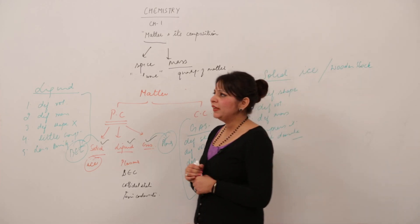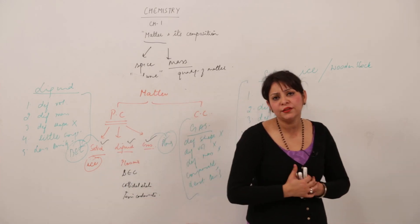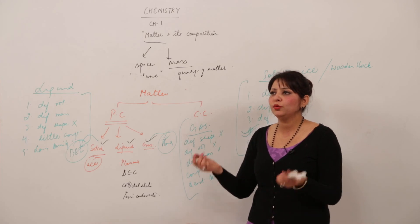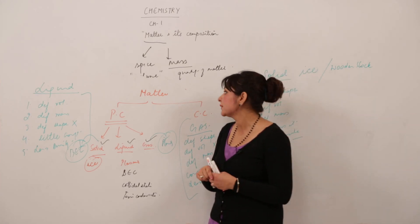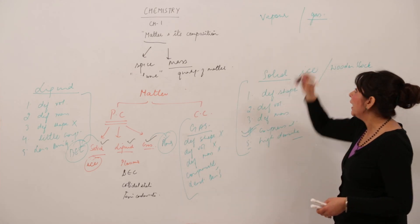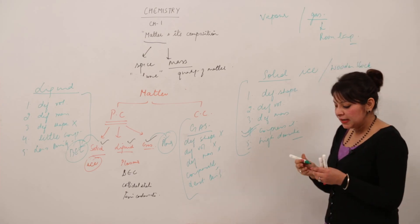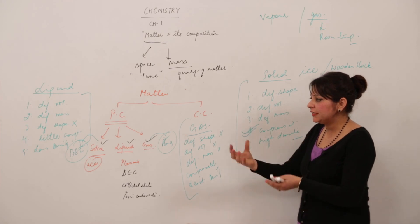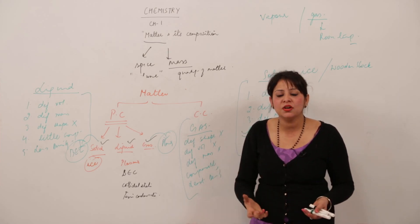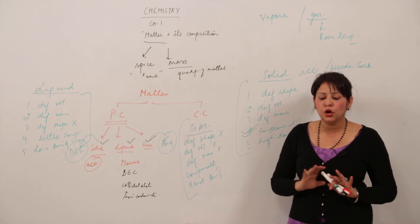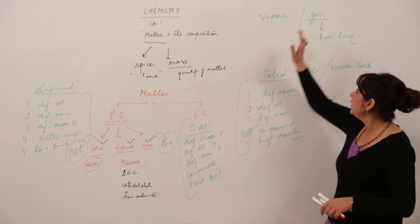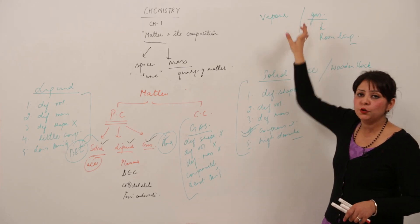One more important distinction: we often use the words vapor and gas interchangeably, but there is a difference. A substance is said to be a gas when it exists as gas at room temperature and normal pressure. For example, O2 at room temperature exists as gas only — so O2 is called a gas.